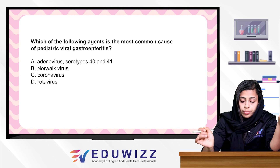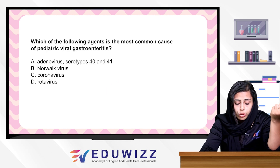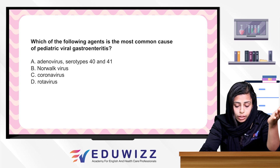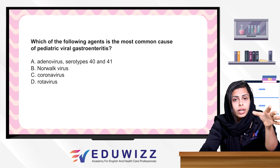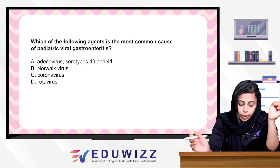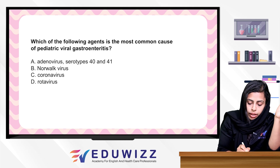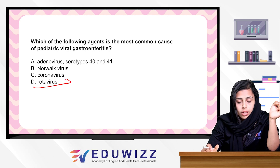The next question: Which of the following agents is the most common cause of pediatric viral gastroenteritis? The main cause of pediatric viral gastroenteritis is Rotavirus.